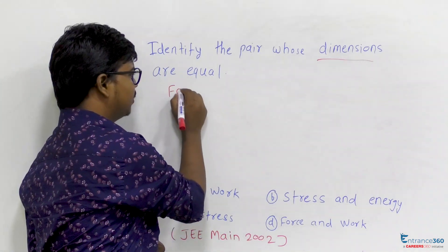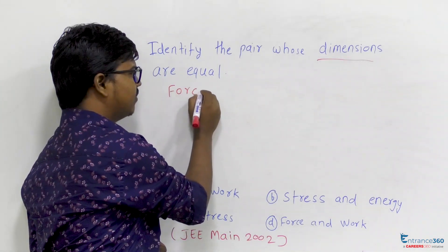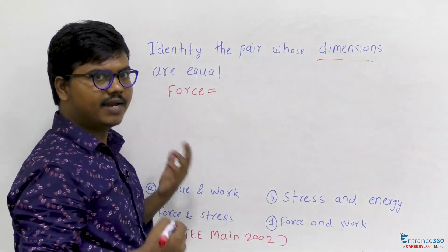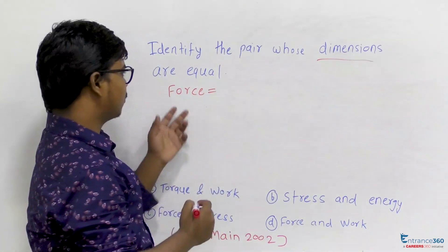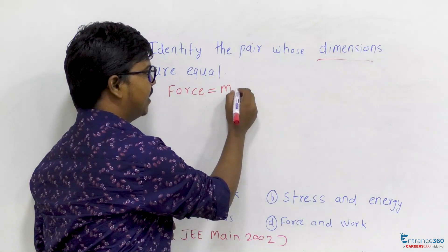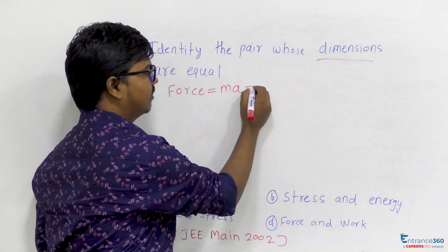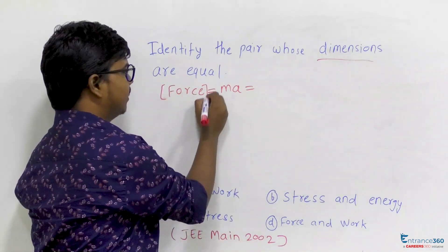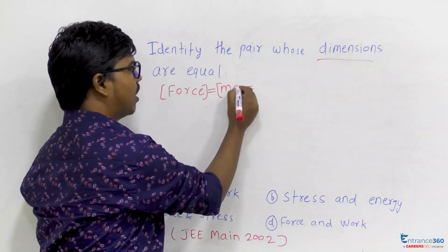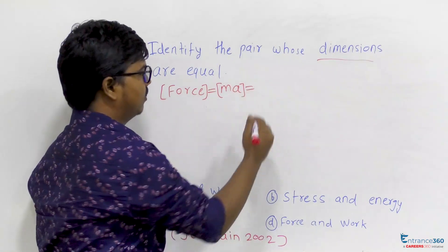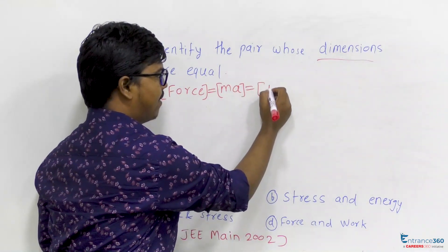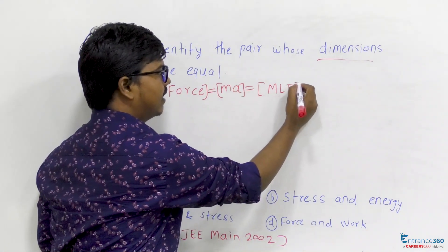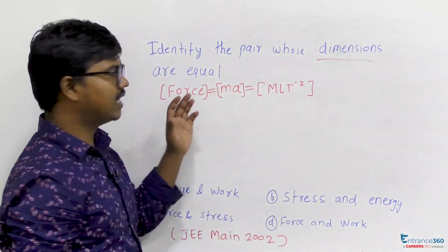Force is simply mass into acceleration, so the dimension of force equals the dimension of MA, which is equal to M L T minus 2. This dimension of force is asked in many questions and is helpful in many concepts.